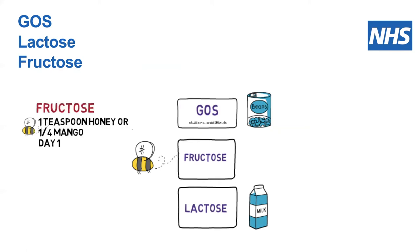To give you an example: for fructose, we normally suggest people test their tolerance by using either honey or mango. If you're doing it over three days, it would be one teaspoon of honey on day one, two teaspoons on day two, and three teaspoons on day three. If you were using mango, it would be a quarter of a mango on day one, half a mango on day two, and three quarters of a mango on day three.